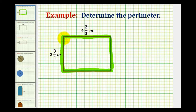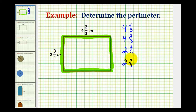If we want the sum of the lengths of the four sides, we'll have two sides that have a length of four and two-thirds — this side here and the opposite side — and then we'll have two sides that have a length of two and three-fourths meters, this side here and the opposite side.